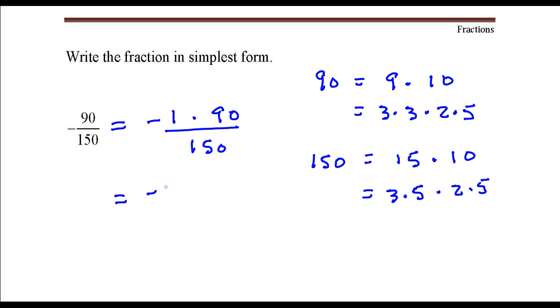So in the numerator, we have negative 1 times 3 times 3 times 2 times 5. In the denominator, we have 3 times 5 times 2 times 5.